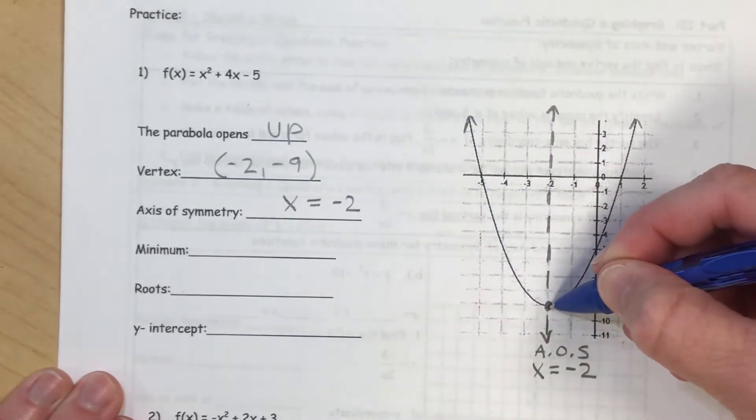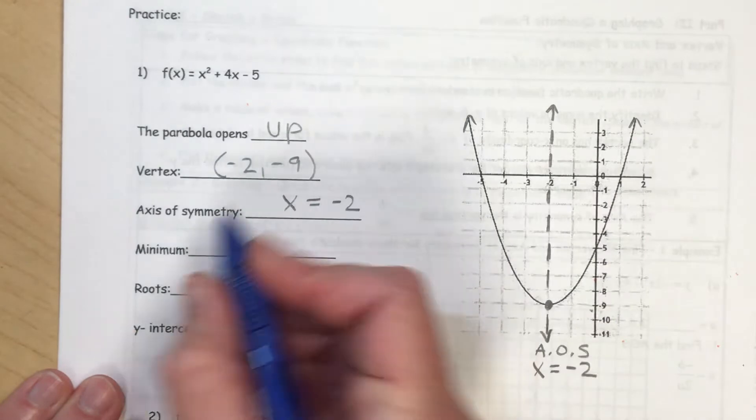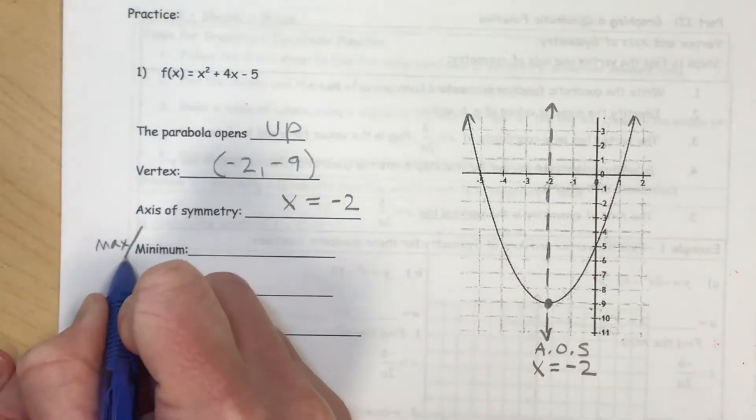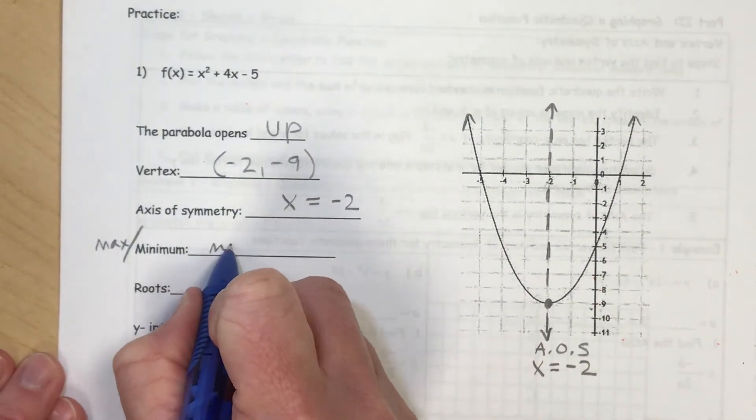Now this is the lowest point of the graph, so the minimum. I meant to put max or min, but I wrote minimum. So minimum is correct.